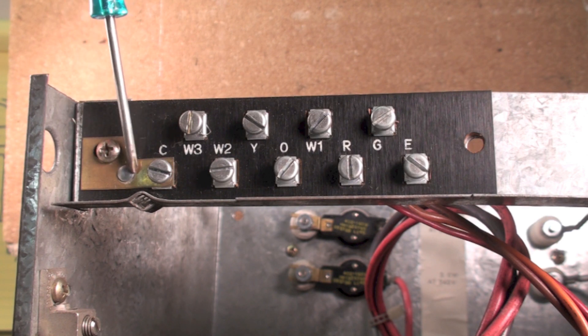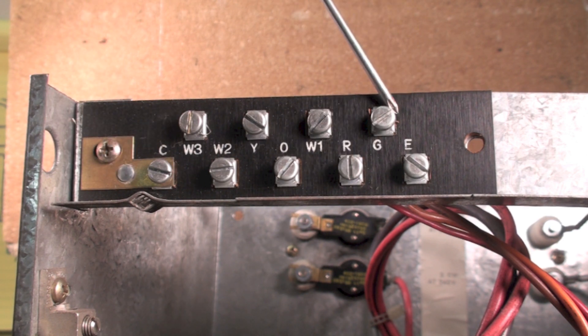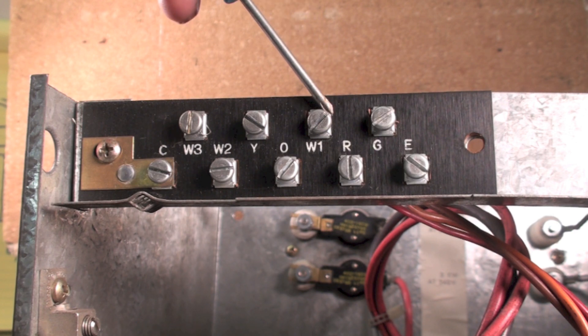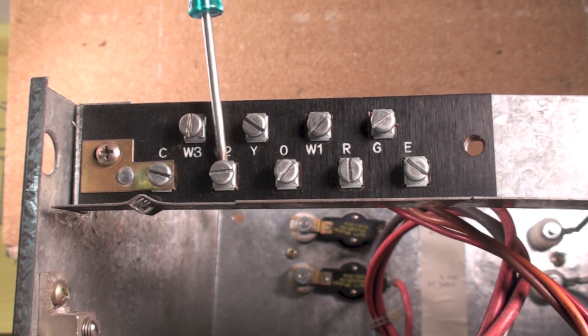Common is obviously common 24 volts. There's your power at R. G is fan. And this one has a W1, a W2, and a W3.